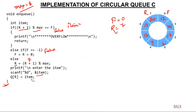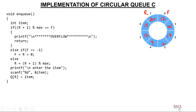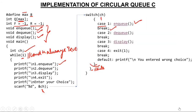Now the queue is full. Enqueue is called again. Check overflow: R is 7, so (7+1) % 8 = 8 % 8 = 0. Is 0 equal to front (0)? Yes — you can clearly see that incrementing rear would reach where front already is, meaning an element is already there. So we print overflow, cannot insert, and return. This code is working correctly.